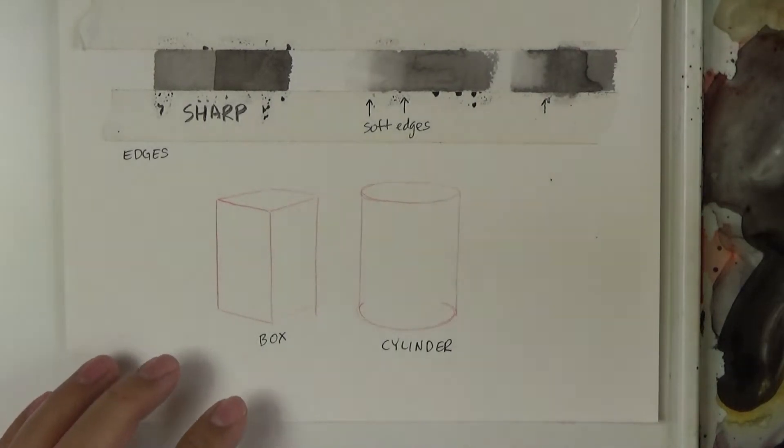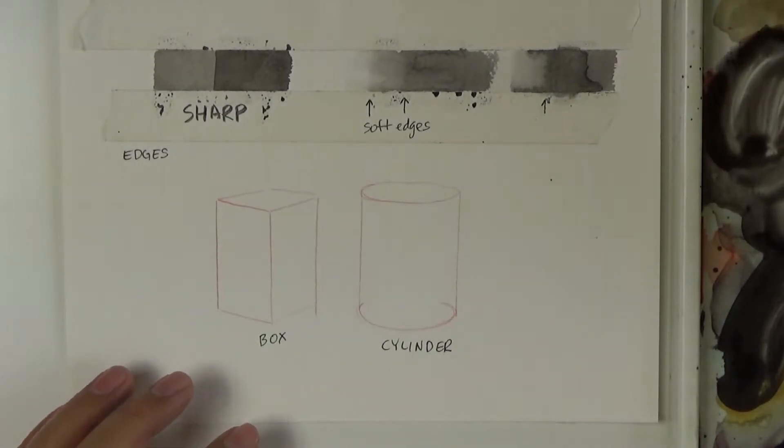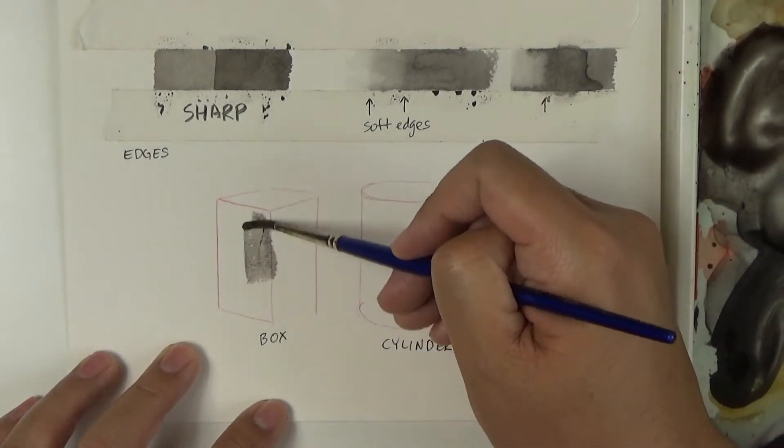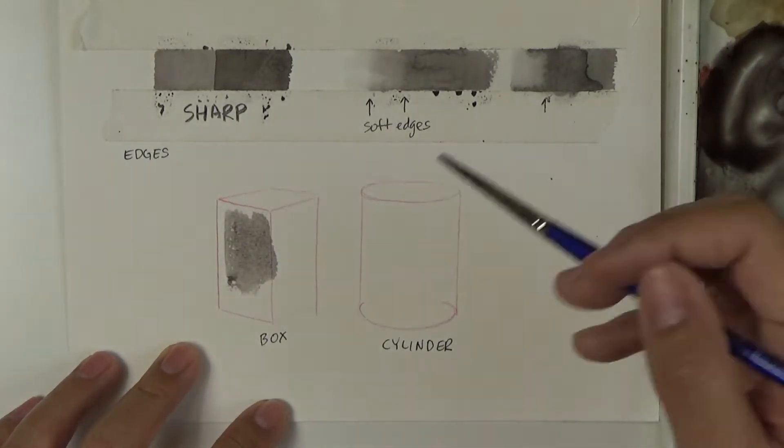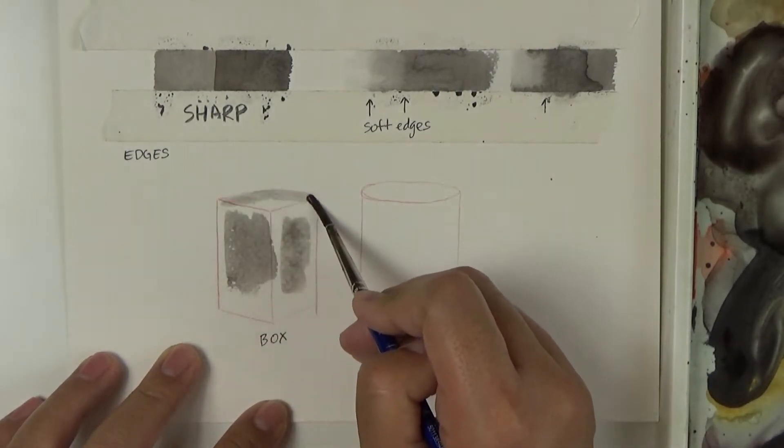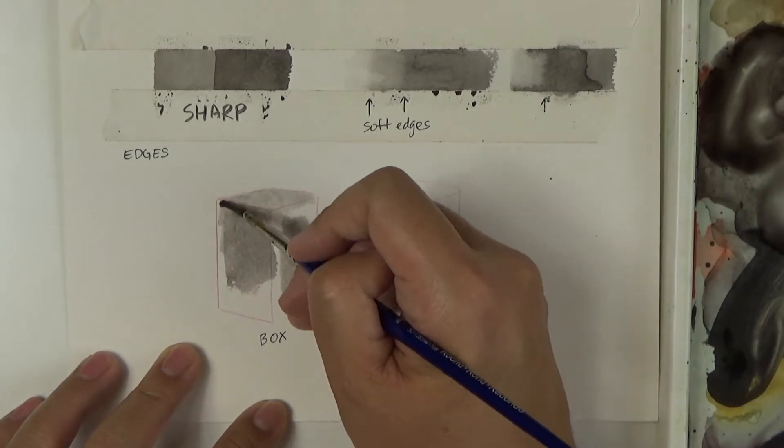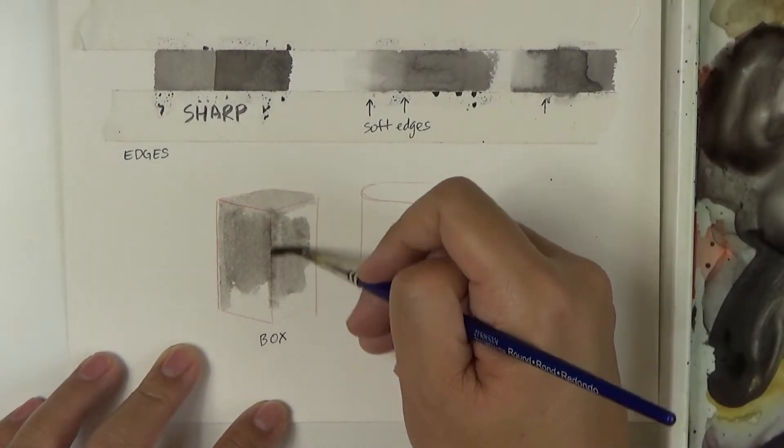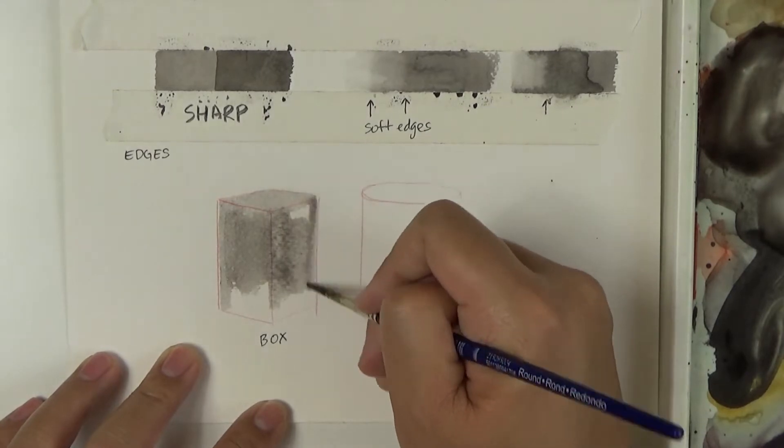So let's start with the box form which as you can probably guess is going to have much sharper edges. And of course one way to do that is to just go ahead and cover that whole thing with paint.